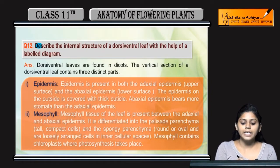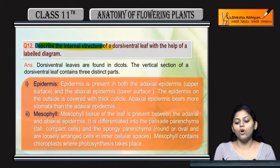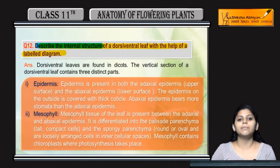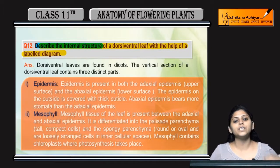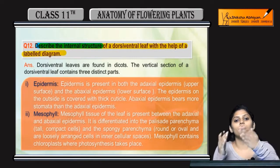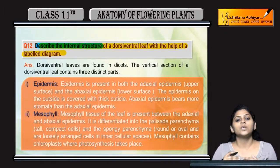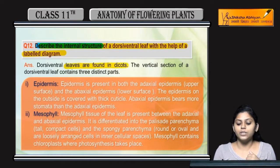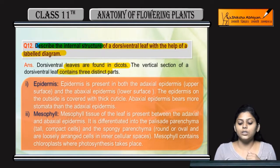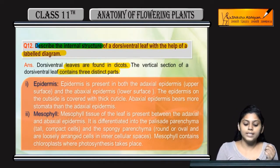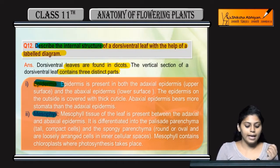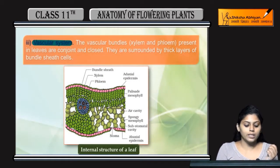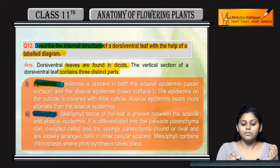Q12: Describe the internal structure of a dorsiventral leaf with the help of a labelled diagram. A dorsiventral leaf has both a dorsal and ventral surface. In dicots, if we study a vertical section, it contains three distinct parts: epidermis, mesophyll, and the vascular system.